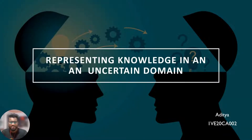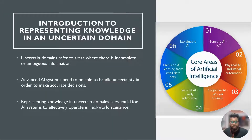Welcome back to another video. In this video we'll be talking about representing knowledge in an uncertain domain. Uncertain domain refers to the area where there is incomplete or ambiguous information. Advanced AI systems need to be able to handle uncertainty in order to make accurate decisions. Representing knowledge in an uncertain domain is essential for AI systems to effectively operate in real world scenarios.